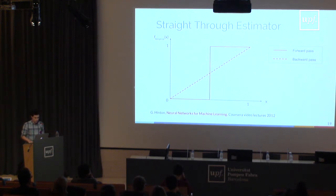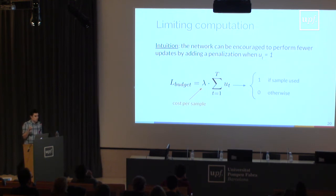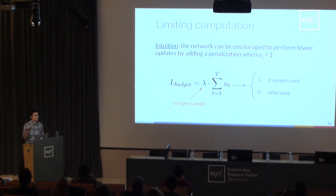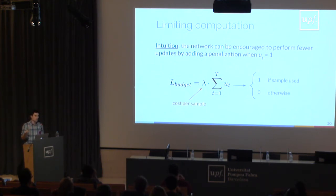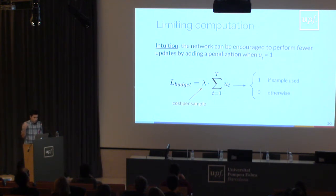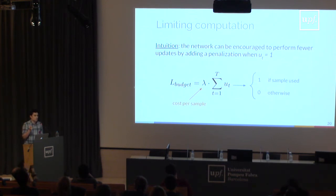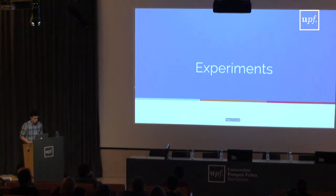With this we can already train our model, but we also add an additional loss term which encourages the network to use more or fewer updates. Without this you can train a model but you're not telling it to use as few samples as possible. It's similar to weight decay — you regularize the network to solve the task with as few updates as possible. With this lambda you can tune how many updates are performed and find different operating points for your network — for example using many updates in a data center during training but fewer updates during inference on a smartphone.